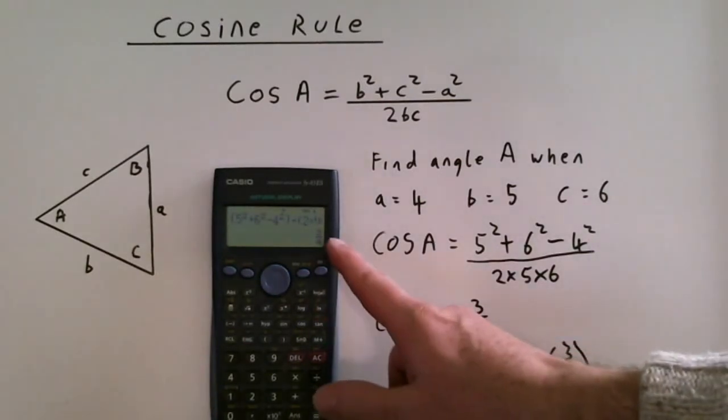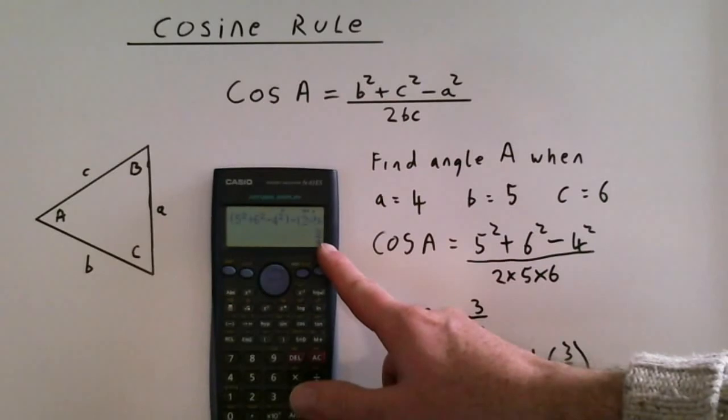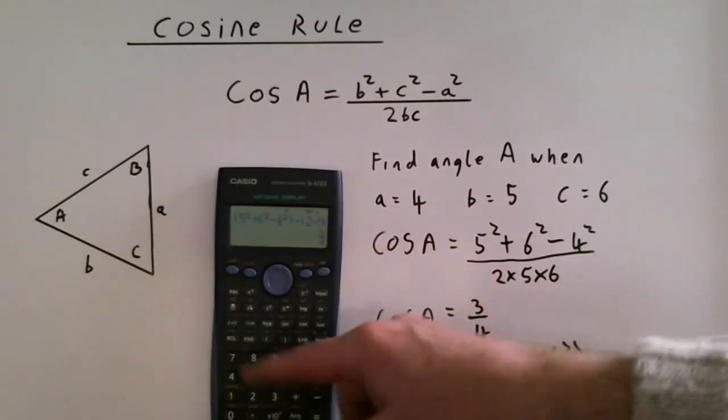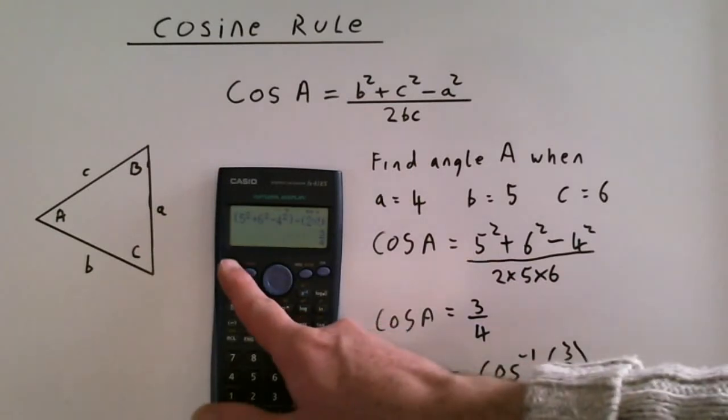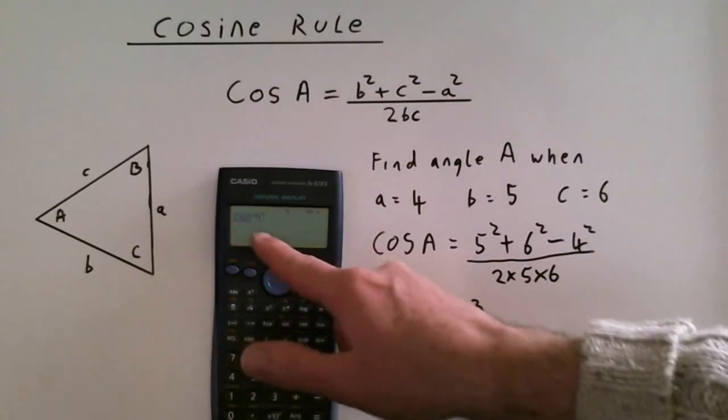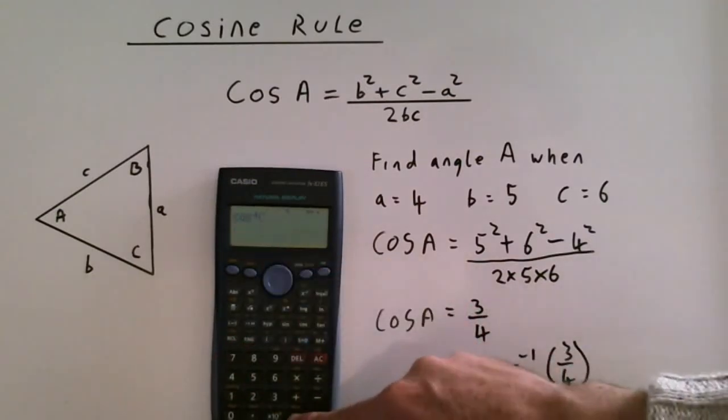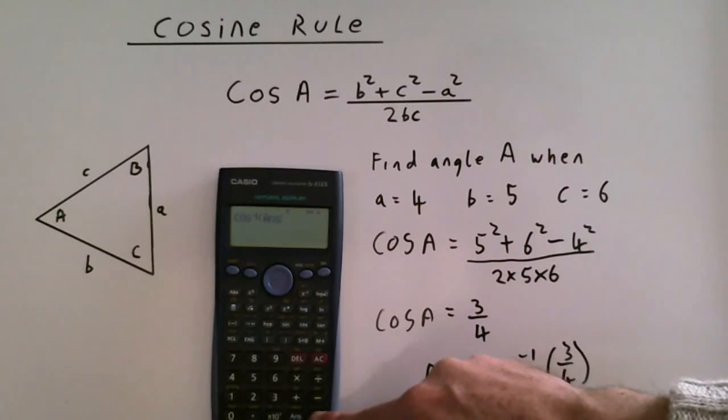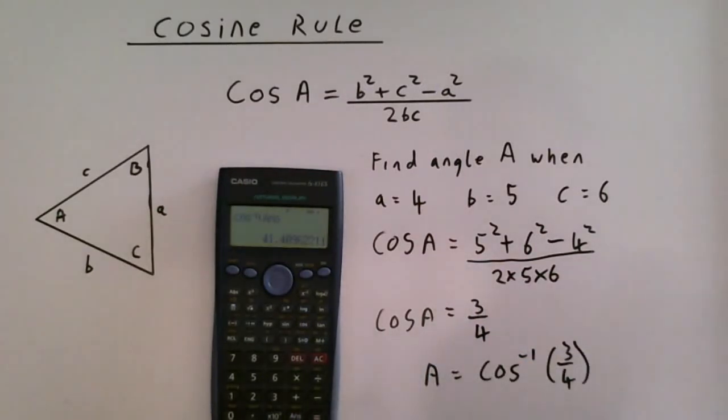Using this calculator, I can use the 3 quarters as the answer. To find cos to the minus 1, I go shift, cos to the minus 1, and then press the answer, which gives the 3 quarters. So we've got 41.41 degrees.